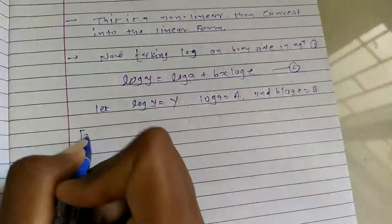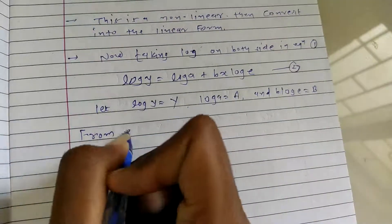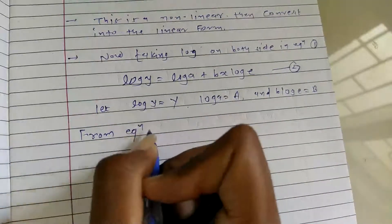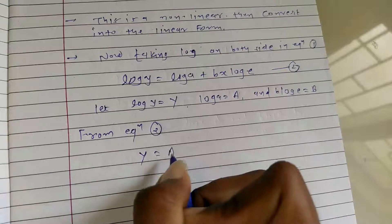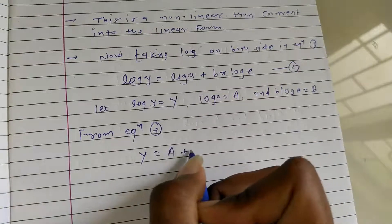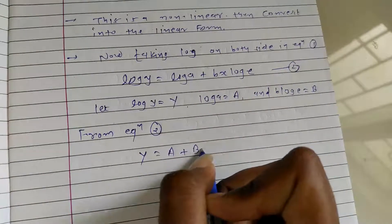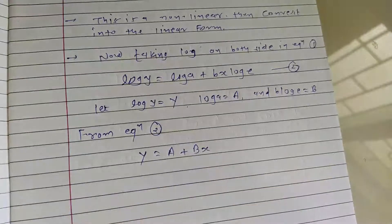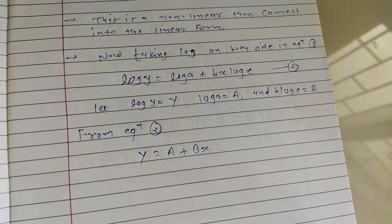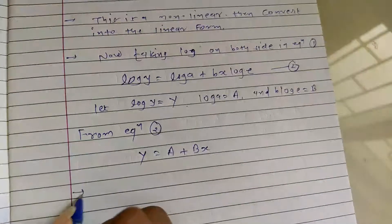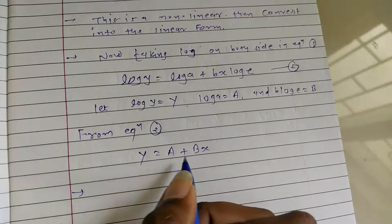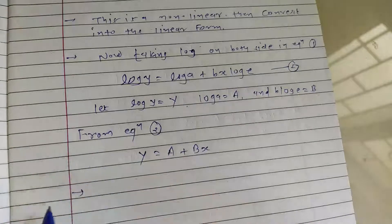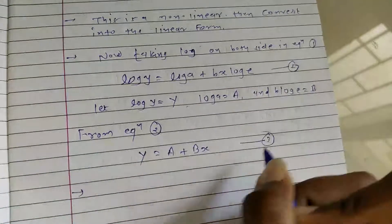From equation number two, we get Y is equal to A plus Bx, which is a linear equation. Now we write the normal equations of this linear equation — equation number three.